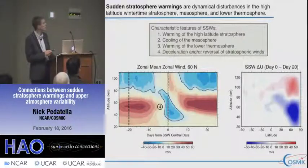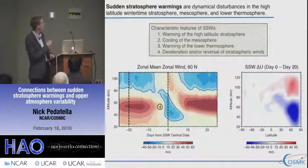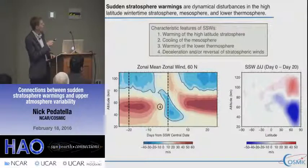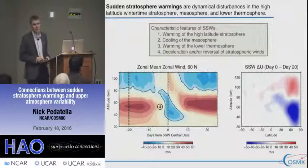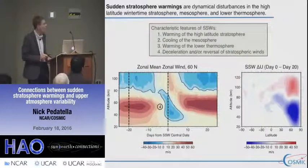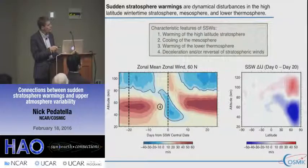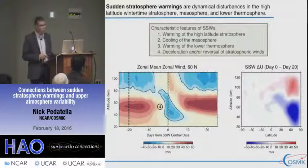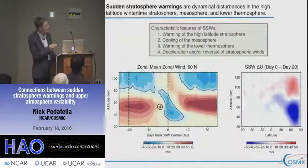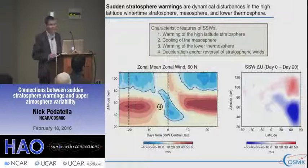This similar plot shows the zonal mean zonal wind at 60 degrees north, altitude versus time. During the stratosphere sudden warming period — indicated by day zero — you get a deceleration of the winds. This is a case of a major stratosphere sudden warming, so the winds actually reverse direction in the stratosphere, and in the mesosphere they also reverse but in the opposite direction. These large perturbations are restricted to the high-latitude stratosphere and mesosphere, not propagating much equatorward of about 40 to 50 degrees.